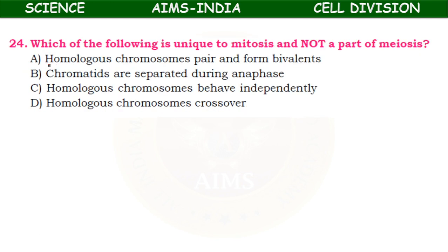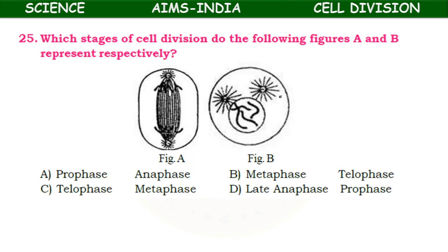Which of the following is unique to mitosis and not a part of meiosis — homologous chromosomes pair and form bivalents, chromatids are separated during anaphase, homologous chromosomes behave independently, or homologous chromosomes crossover? Except option C, the remaining all take place during meiosis. So homologous chromosomes behaving independently is unique to mitosis.